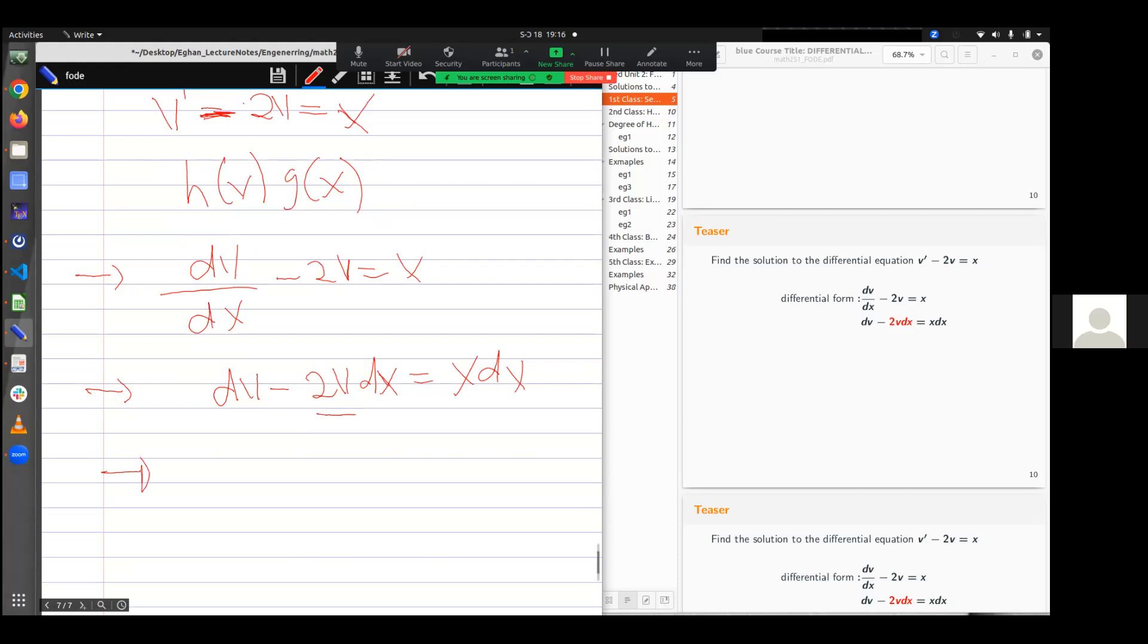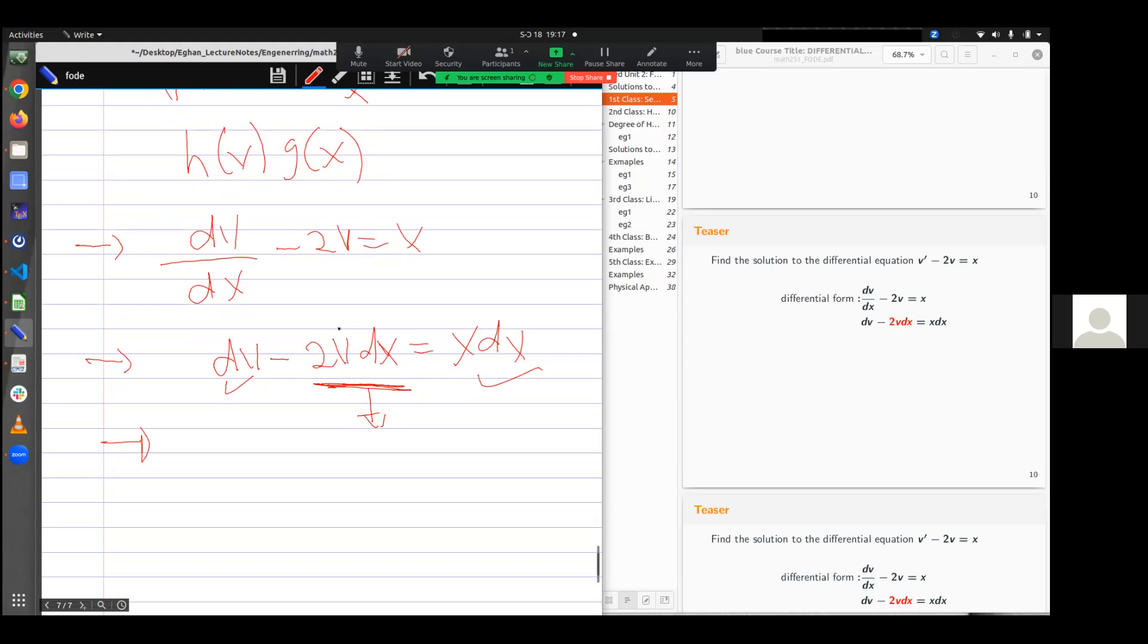Because this one here, no matter the divisions I do, I'll still have v and then x playing together. This is good. But this one here is a problem. So let's see. Someone will still go ahead and say, let me divide by 2v. So I'll have it as 1/(2v) dx - dx is equal to x/(2v) dx.